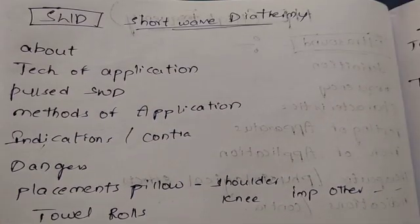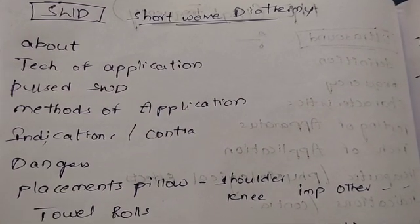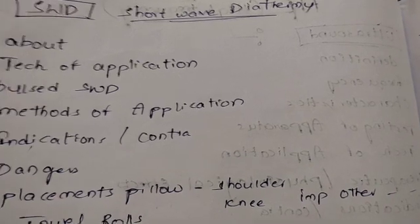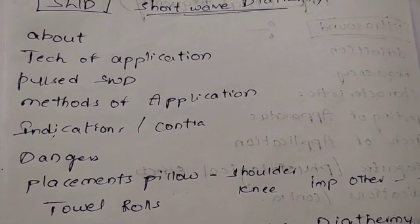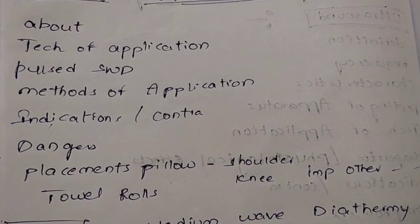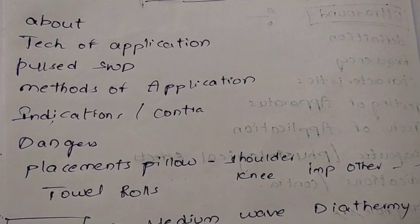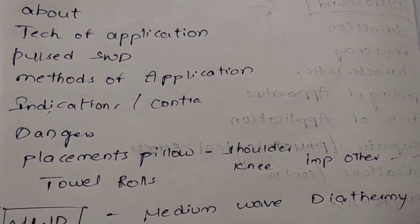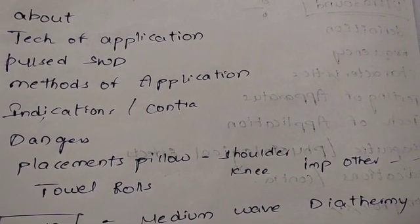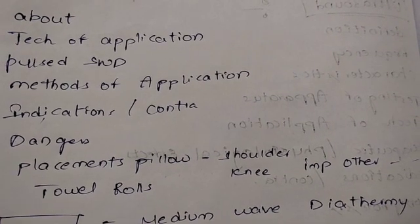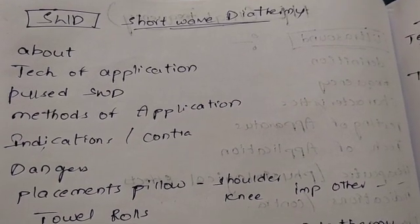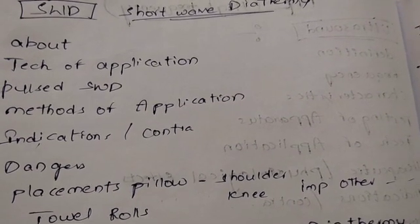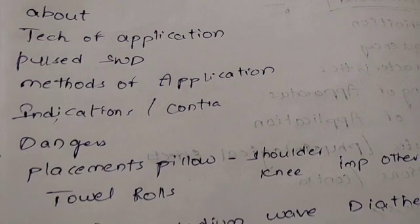Next is SWD — Shortwave Diathermy. Definition, techniques of application, pulsed SWD, methods of application. Indications, contraindications, and dangers. Placements including pillow placements for shoulders, knee, and joints are also specific and important.